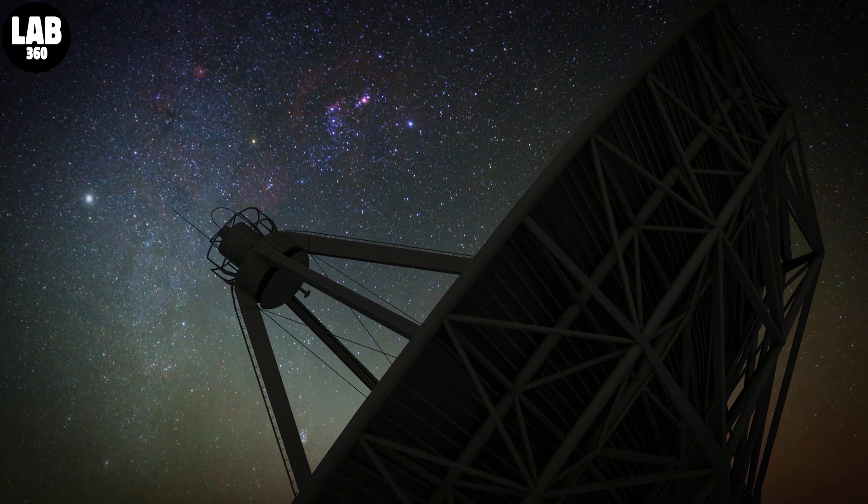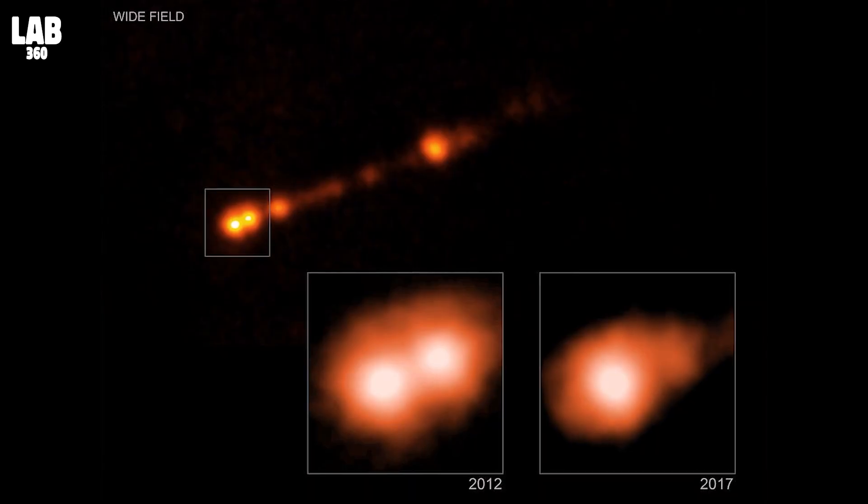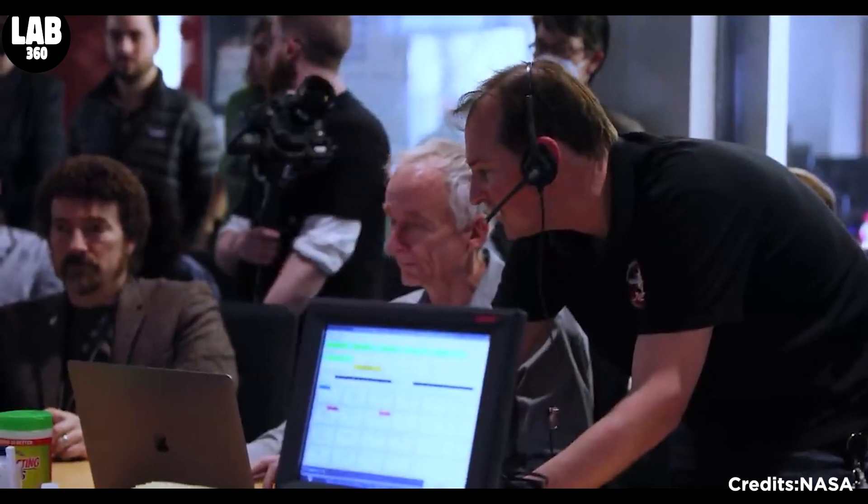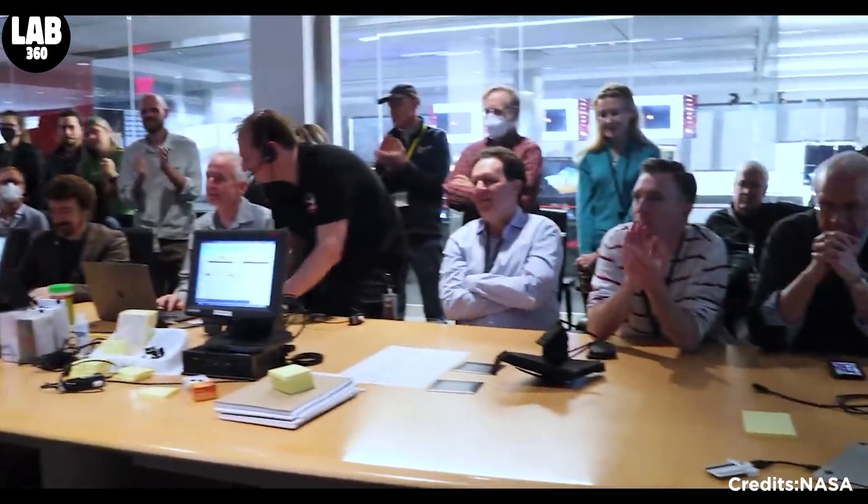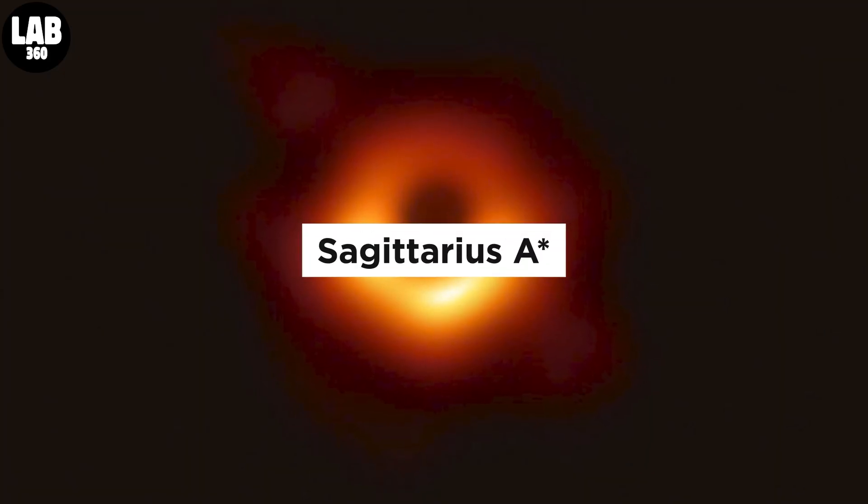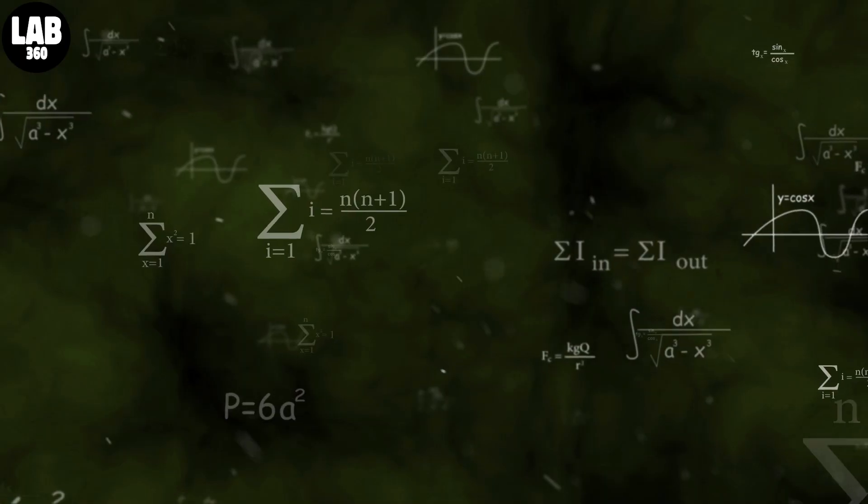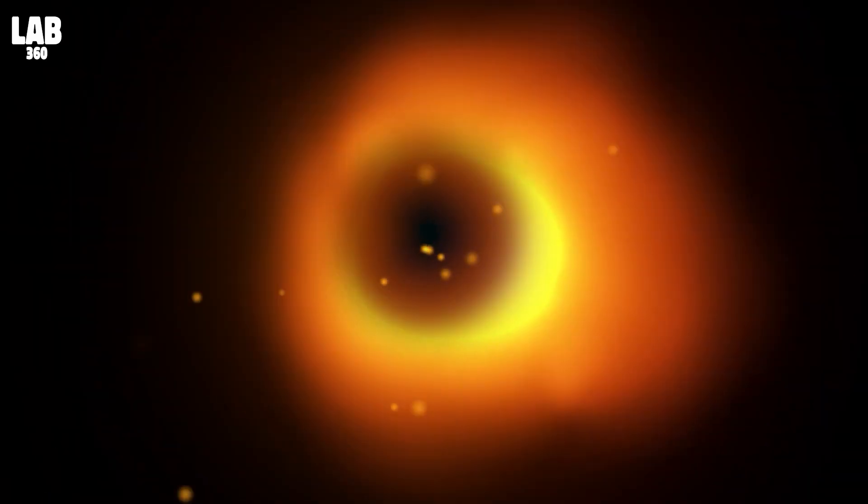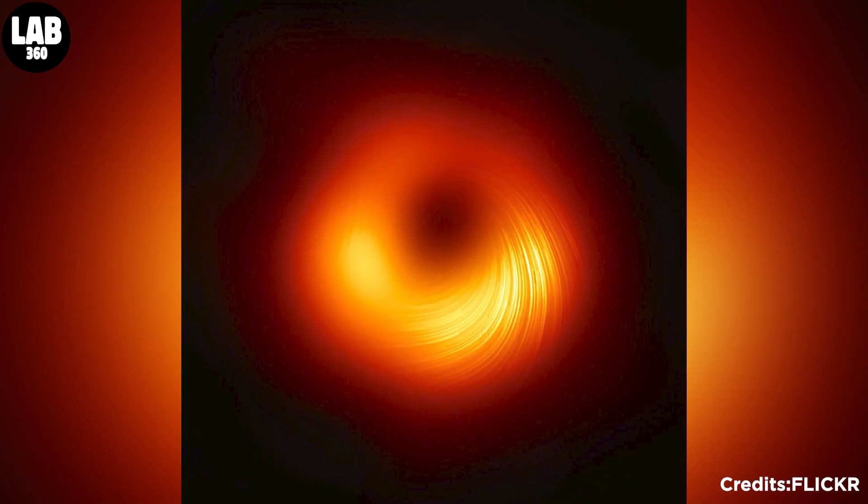The Event Horizon Telescope first made headlines in 2019 when it captured the first image of Messier 87's black hole. But this new discovery has gotten scientists bouncing with joy in their seats. The EHT observed Sagittarius A, the Milky Way's supermassive black hole, at the same moment it obtained the data that generated that image. Sagittarius A, on the other hand, proved more difficult to photograph than M87.